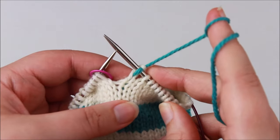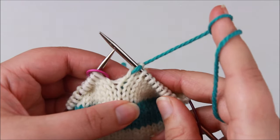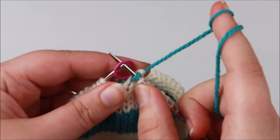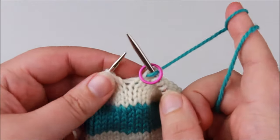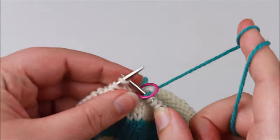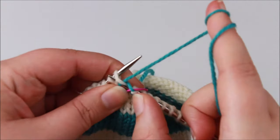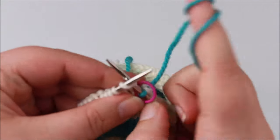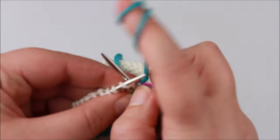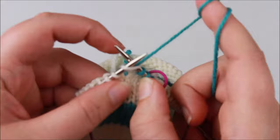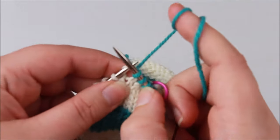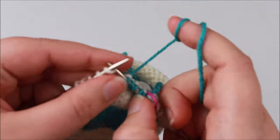So it's actually been worked twice in one go. And now I can move my beginning of round marker if I've got one and we're just going to keep working with the new colour that we've changed to. Just being careful not to split any stitches. And you'll just complete this next round as normal.